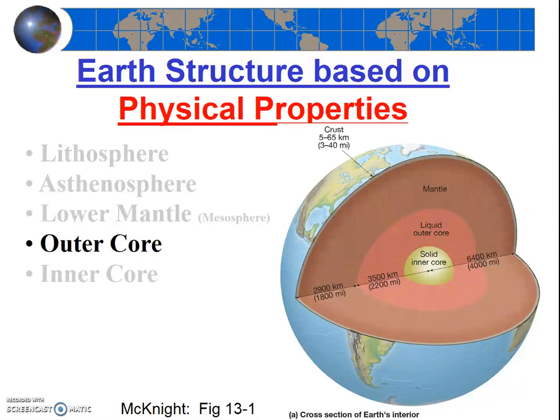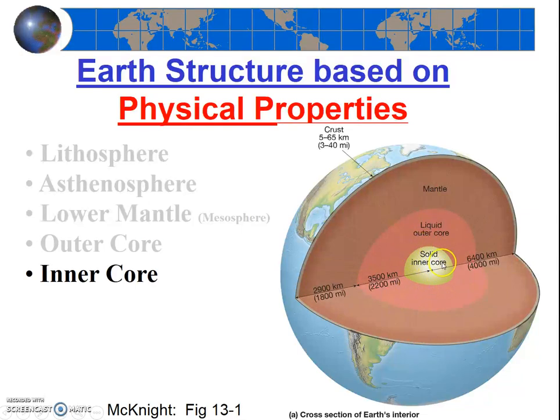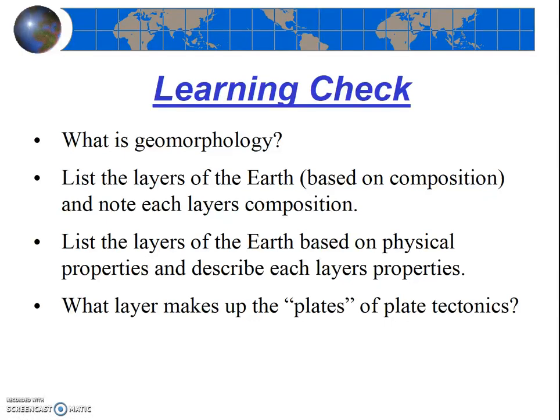There's still a whole lot that we don't understand about the outer core. Finally, at the center, we have the inner core, also made out of iron and nickel. But the intense pressure at the center of the earth makes this layer solid. Pause the video here and answer these questions before moving on to the next video clip.